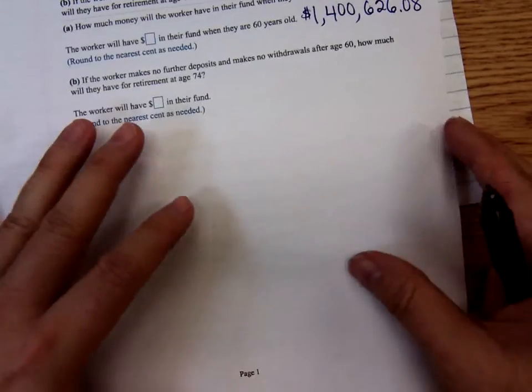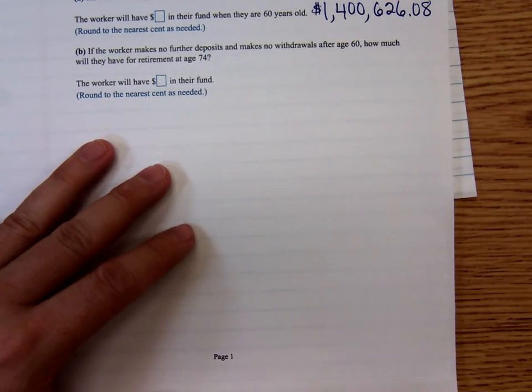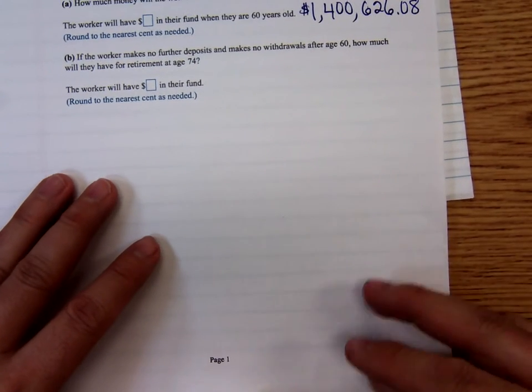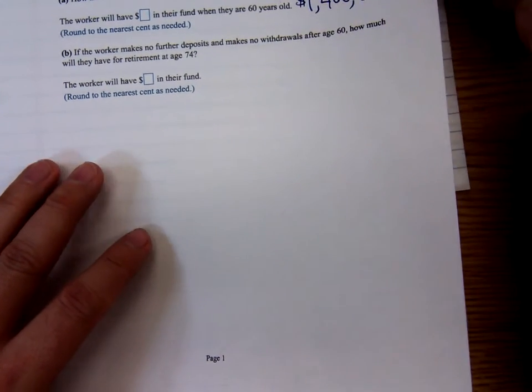As soon as this person stops making contributions to the account, it's no longer an annuity.